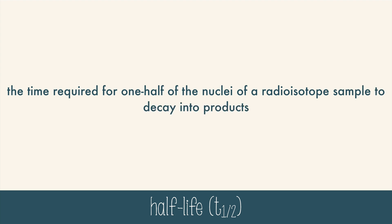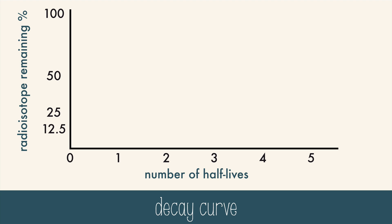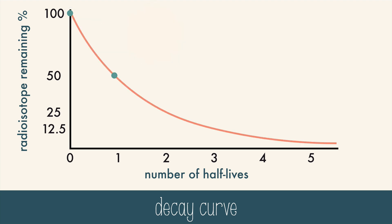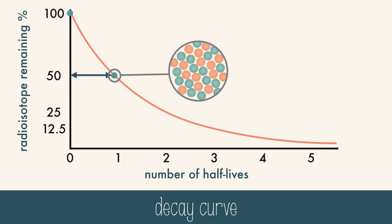Every radioisotope will decay at different speeds. A half-life is the time required for one half of the nuclei of a radioisotope sample to decay into products, often written as T with a one-half subscript. Looking at a decay curve, we begin with 100% of the parent isotope with none of it decayed. As time passes, some radioactive isotopes decay into atoms of a new element. When half of the isotope has decayed, it's been one half-life.